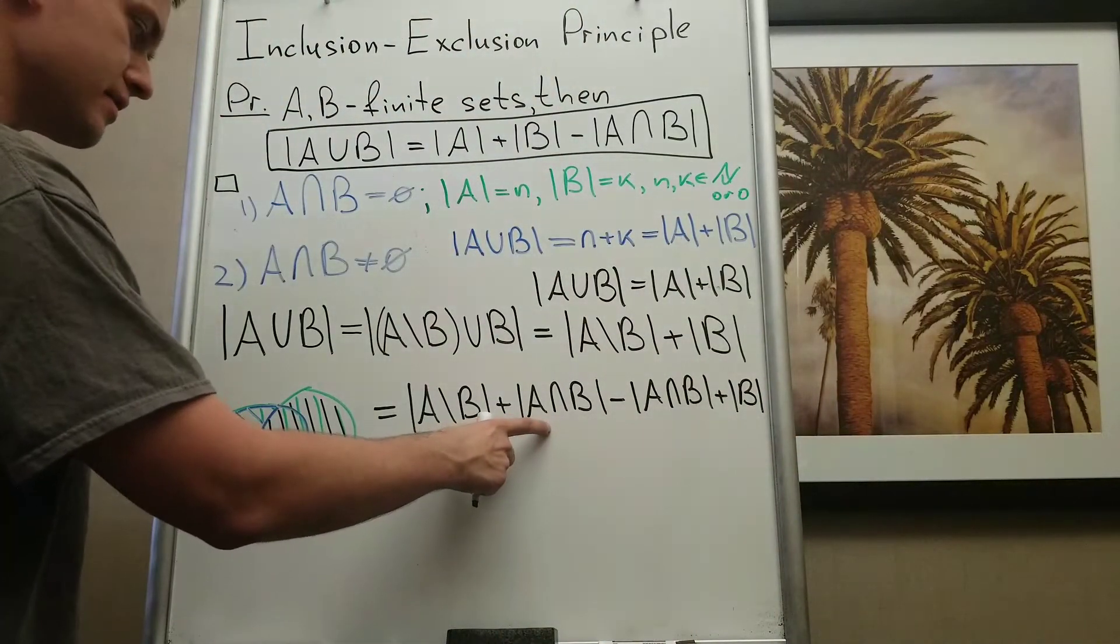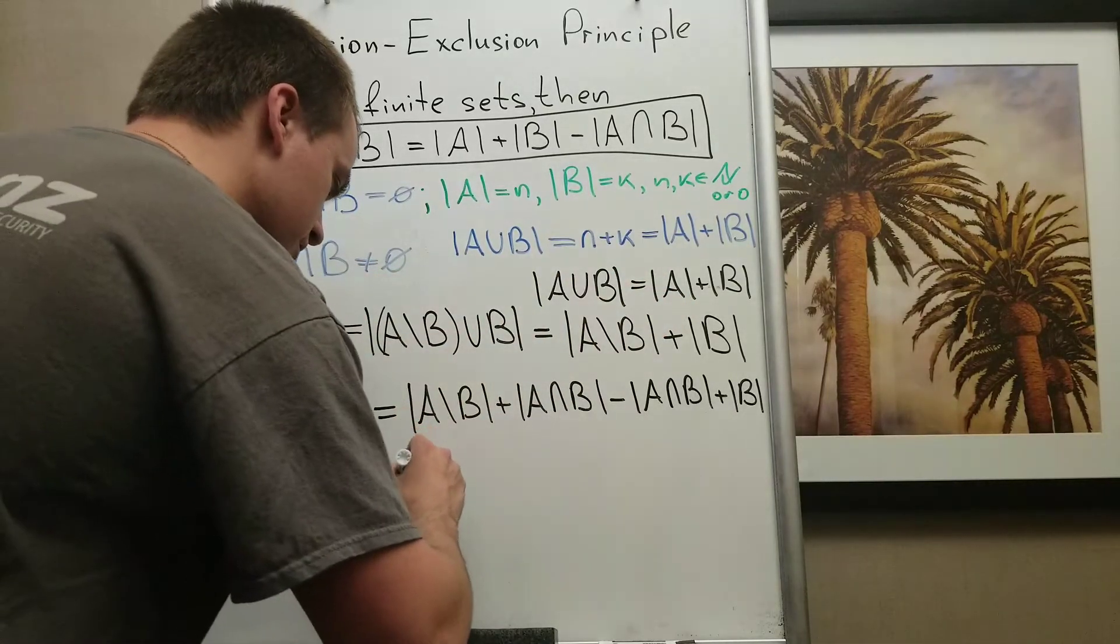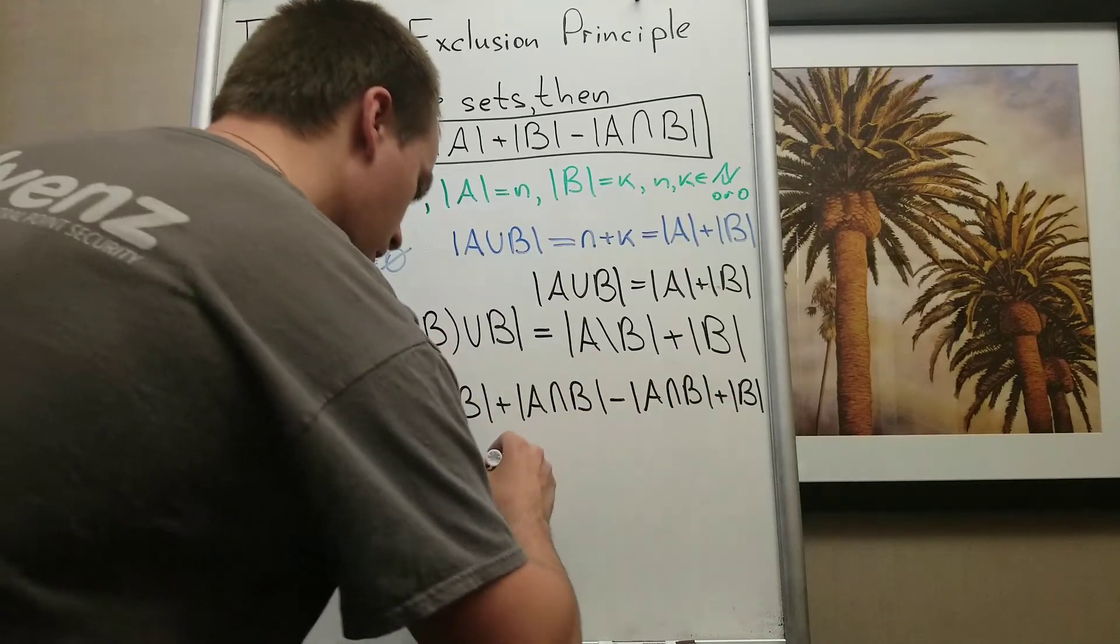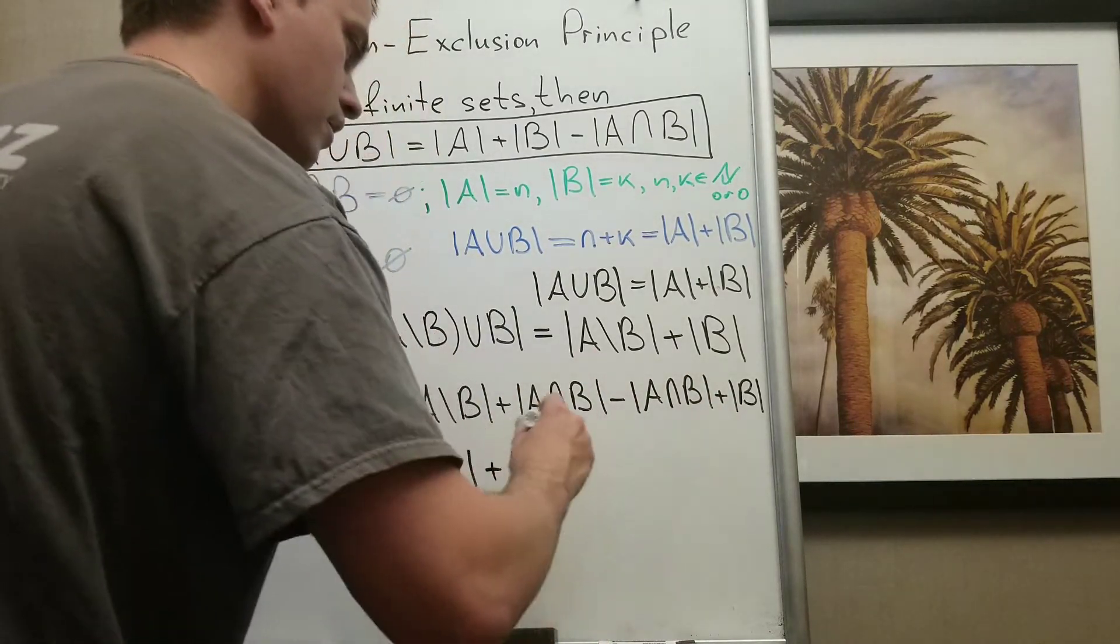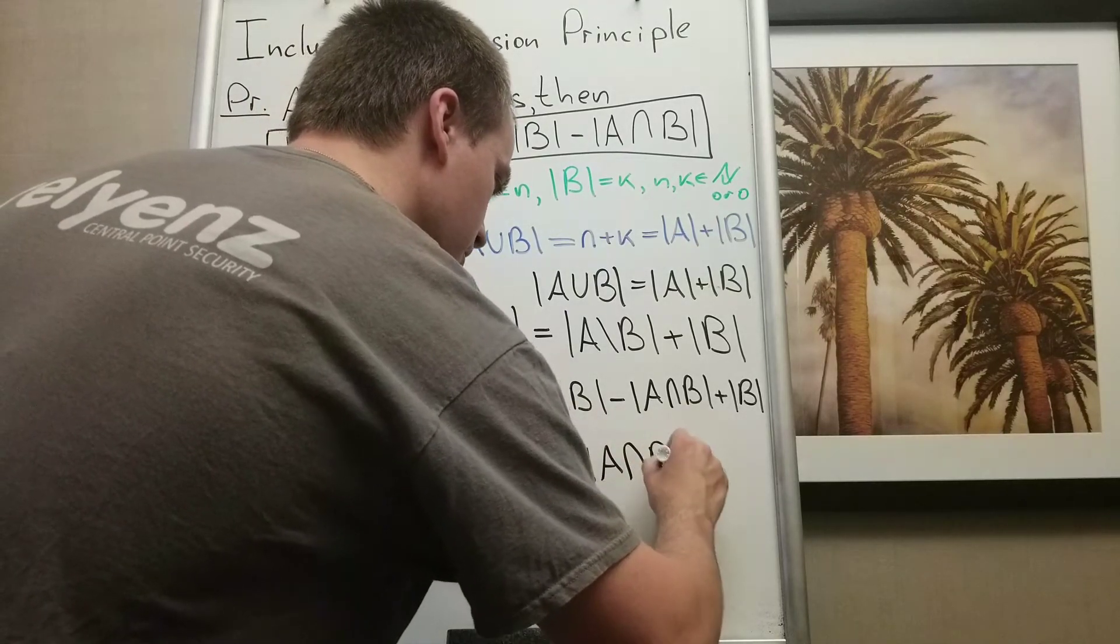And then this set, again by this formula, is going to be just cardinality of A. I will have plus cardinality of B and minus A intersection B.